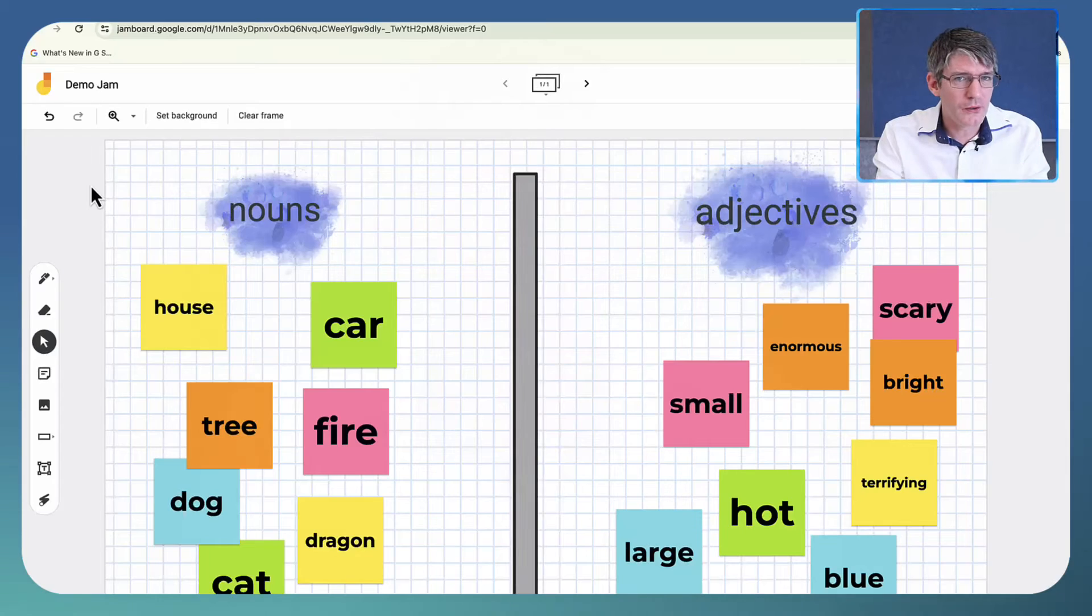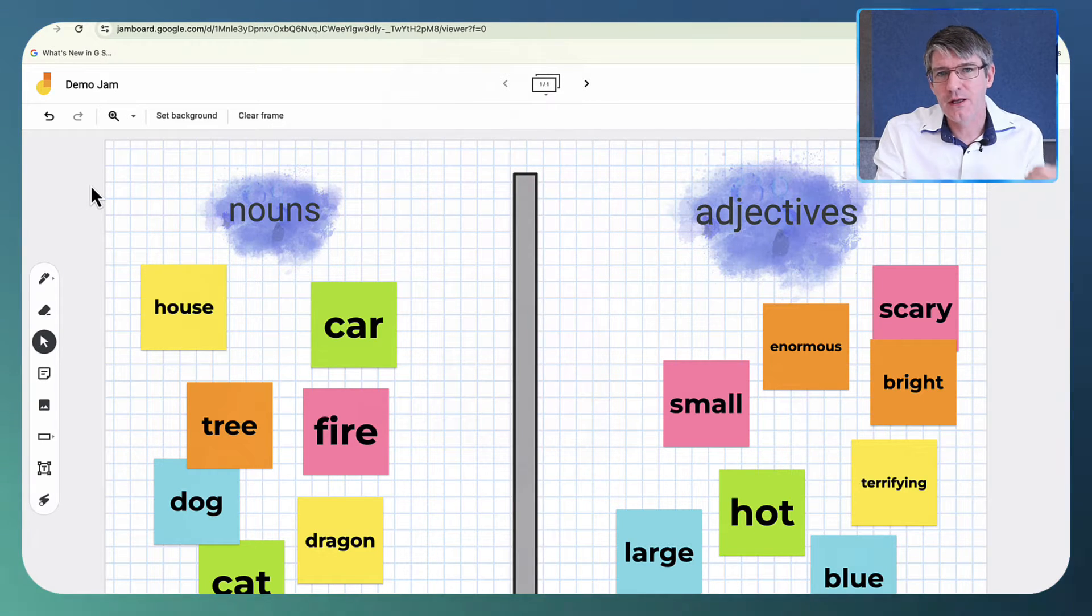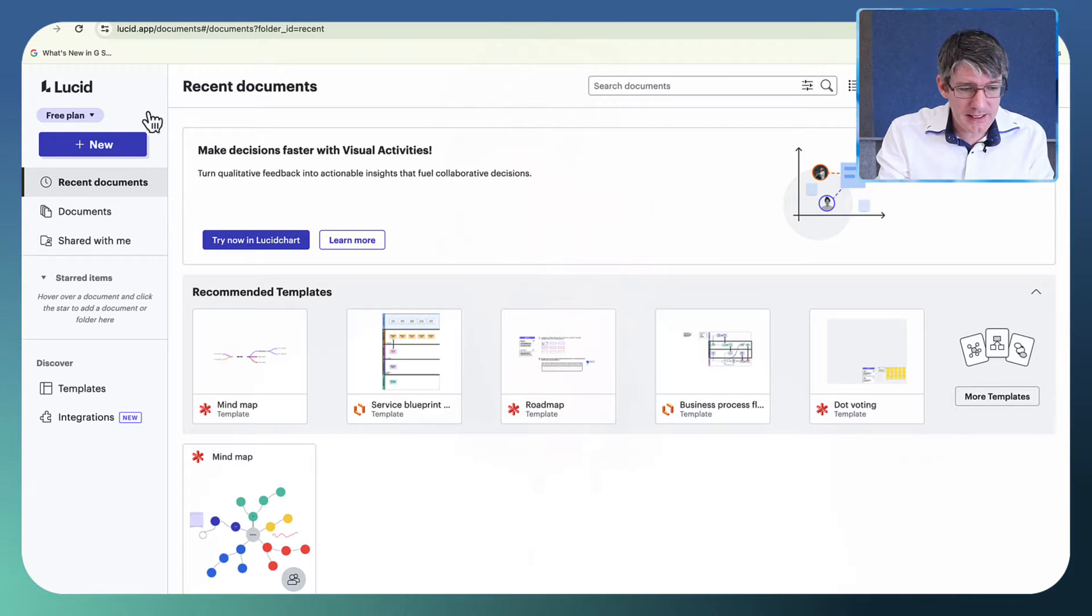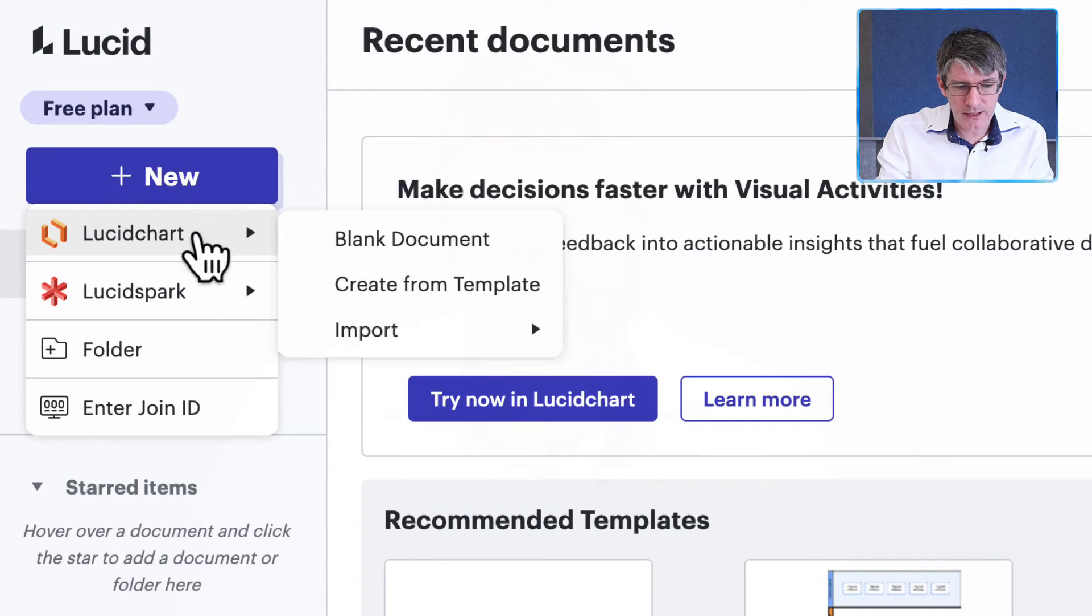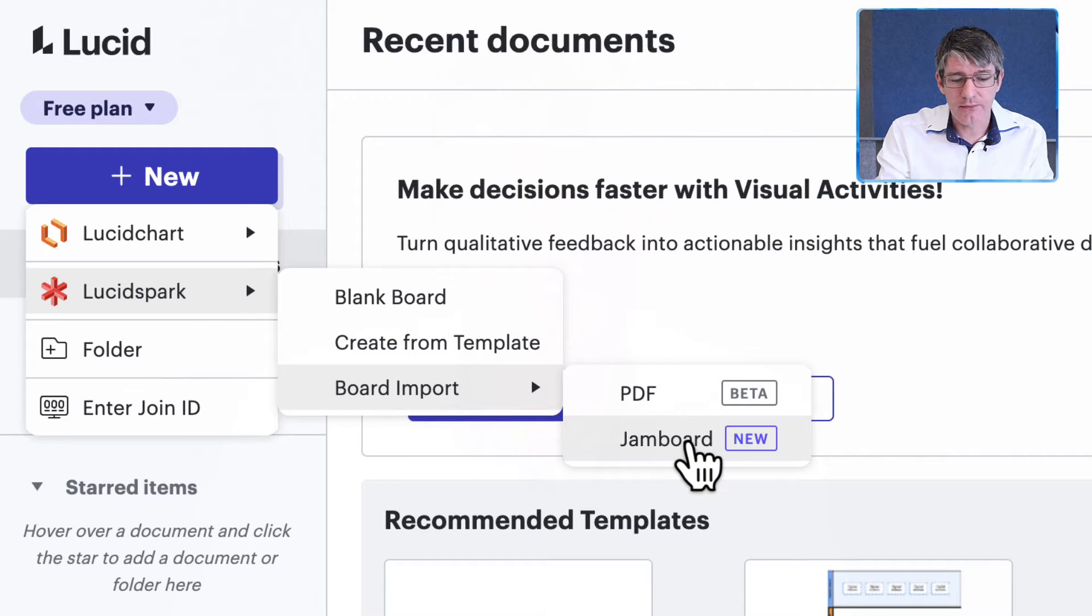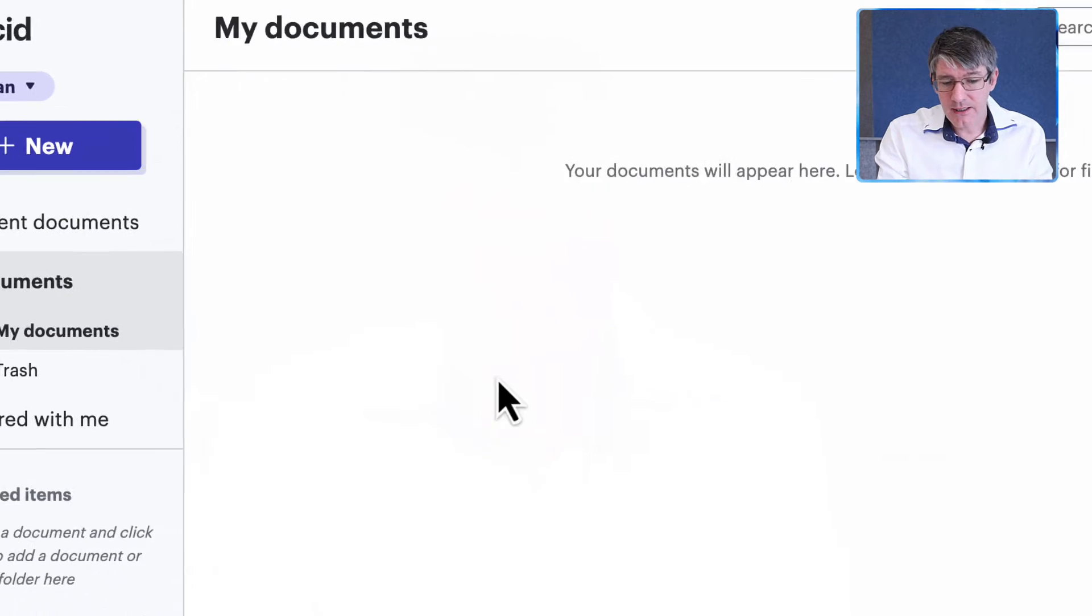Lucid Spark has a built-in conversion tool. You can see here I am in my Lucid Spark account, and when I click on New, I can scroll down to Lucid Spark board import, and I now have Jamboard imports. So let's go ahead and click on this.